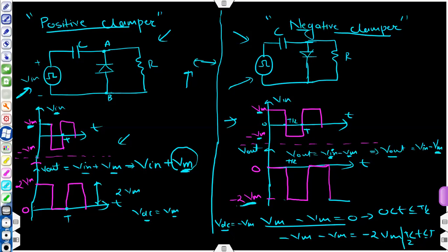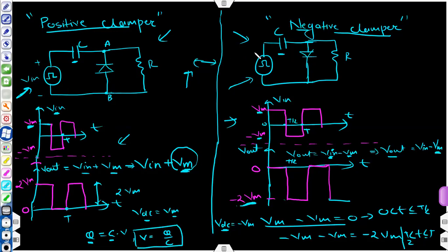The capacitor acts as a charge-storing device. It can store charge Q equals C times V. If it has stored charge Q and capacitance C, then the voltage across its plates is V equals Q divided by C. So this capacitor is acting as a charge storage device, and because of charge Q it will have some constant voltage V equals Q/C across it, and that V acts as a DC signal.